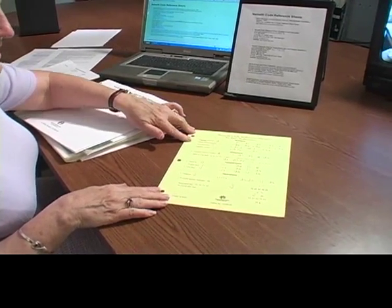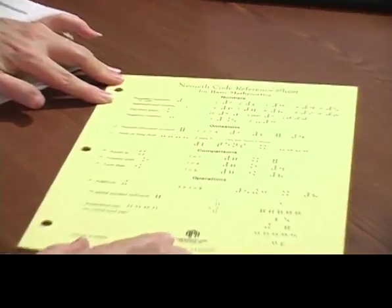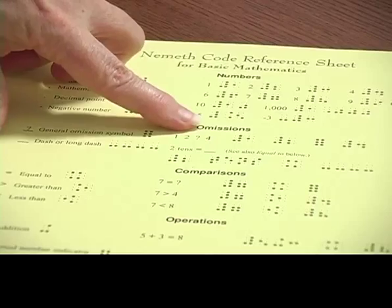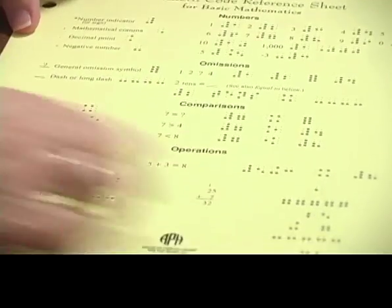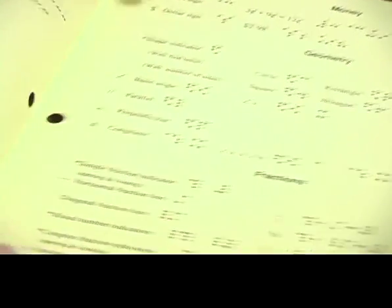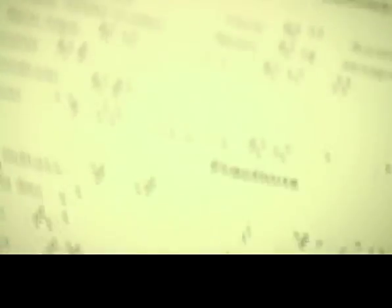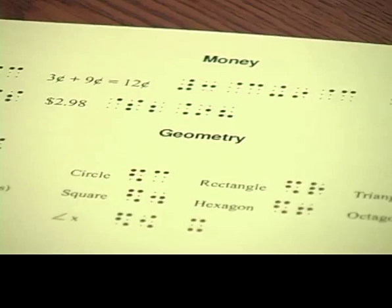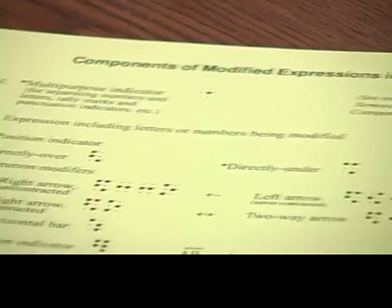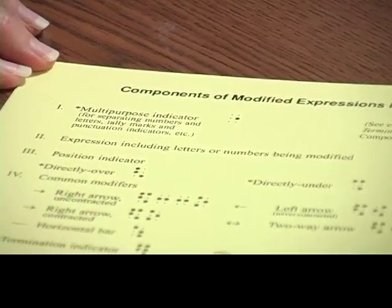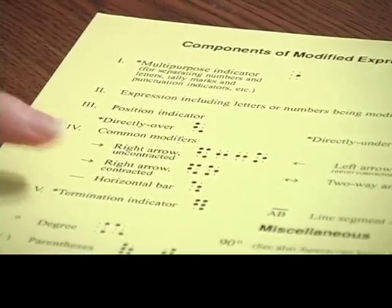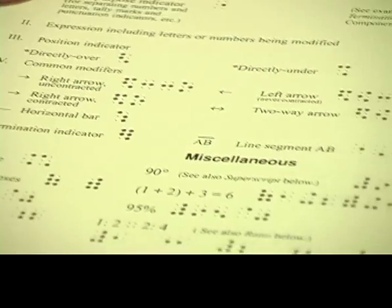The print version is just four pages. The top page has some basic numbers, omissions, comparisons, and operations — not too technically advanced. Then folding over, we've got examples of subtraction, multiplication, and division. The third page covers money, geometry, and fractions. The last page is components of modified expressions — the five-step indicators — and then some miscellaneous. Pretty basic overall.